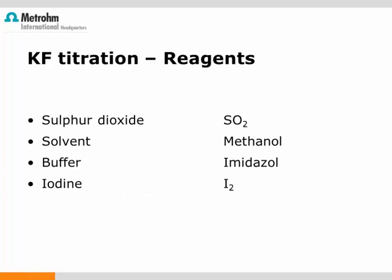The equation of the Karl Fischer reaction leads us to the basic ingredients needed to carry out a Karl Fischer titration. Water comes from the sample, and the other components are contained in the reagents. To guarantee a stoichiometric reaction, a suitable alcohol is needed to esterify the sulfur dioxide completely. Classically, methanol is used as the alcohol component; however, there are also ethanol-based reagents available. The amine base, which acts as buffer, needs to be strong enough for complete neutralization, and the pH value of the solution should be in the range between 5 and 7.